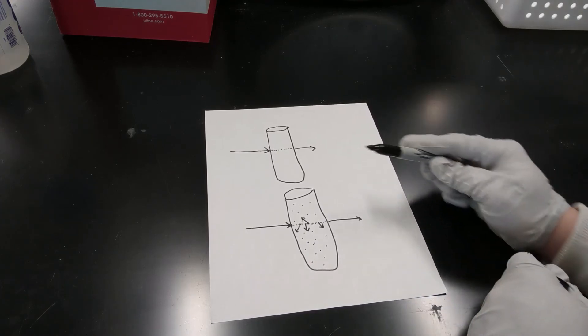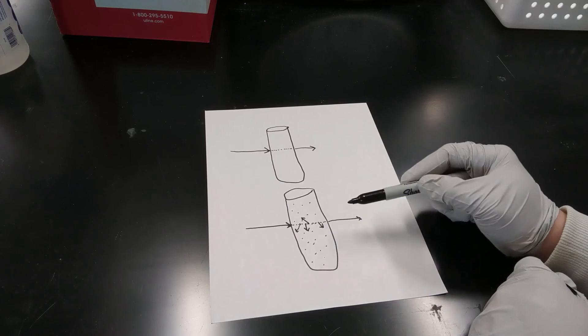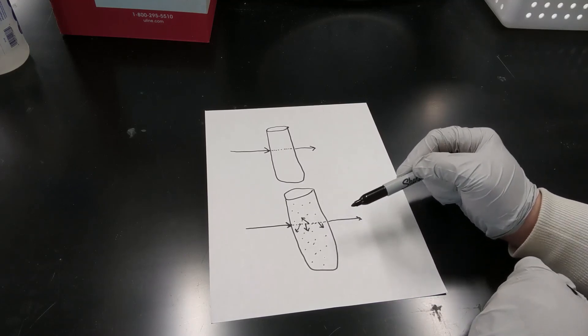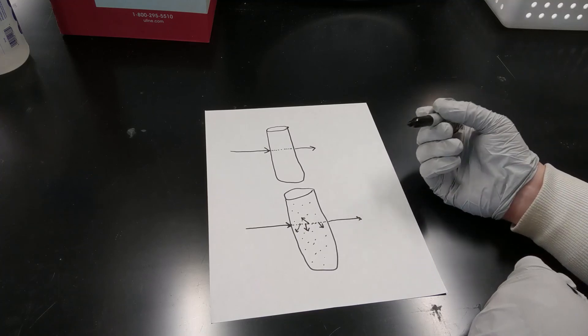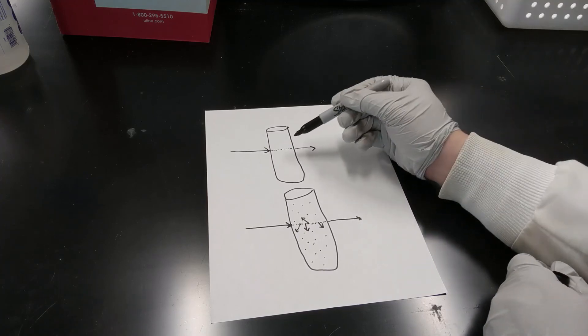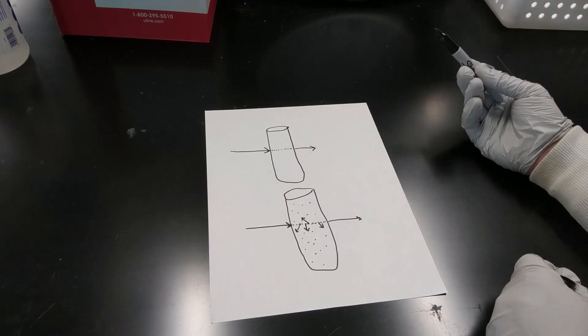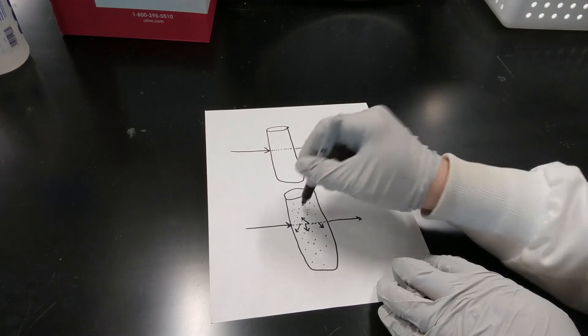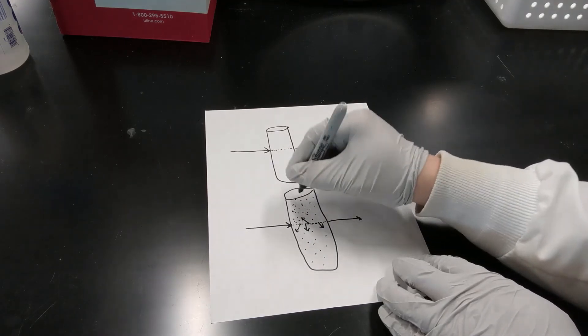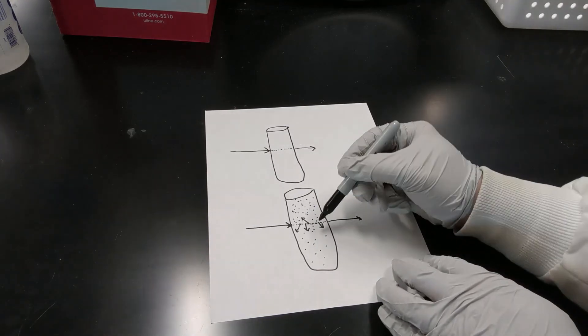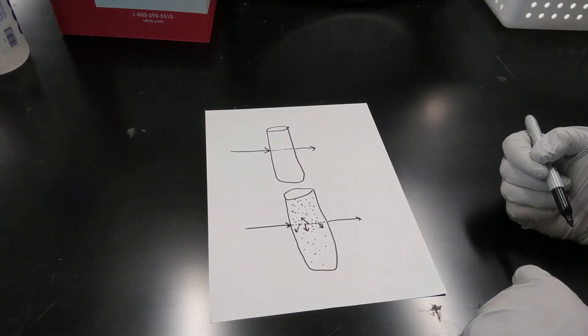That itself is a function of how many particles are floating around in that solution. So if you have just a few of them, you're only going to get a few photons of light bouncing out and hitting the detector. But if you have a really murky solution, you know, all these different particles, then you're going to get a lot of light hitting those particles and bouncing off and hitting our detector.